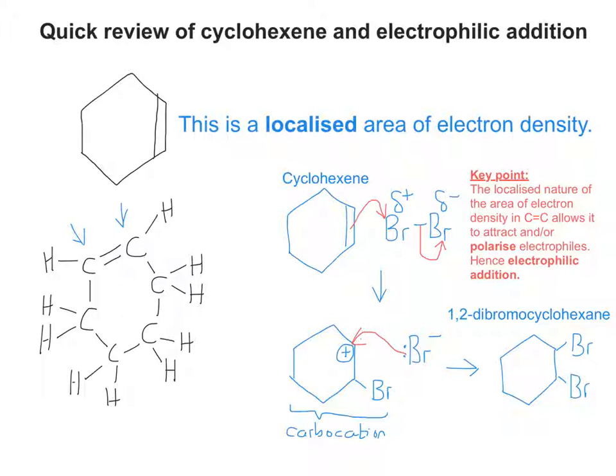The key point to remember is the localised nature of the electron density in carbon-carbon double bonds allows it to attract or polarise electrophiles, for example bromine. Hence we call it electrophilic addition.